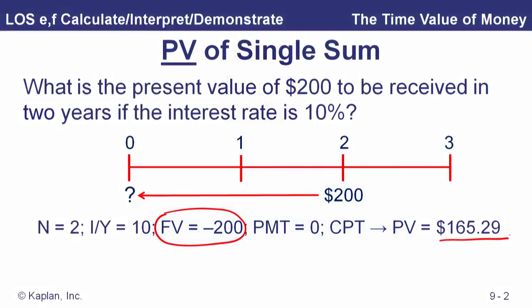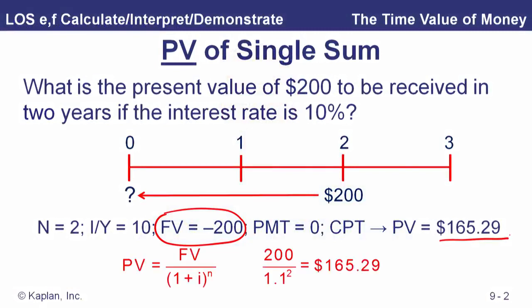So if we put $165.29 in the account today and earn 10 percent compounded annually, there'd be $200 in the account after two years. We can look at the mathematics of it and say now we're discounting — instead of growing that $200 at 10 percent, we're going to divide by 1.1 twice and get the present value of 165.29.